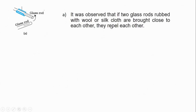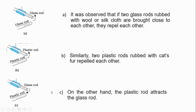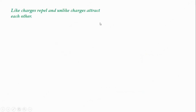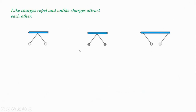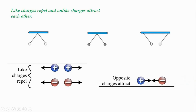It is observed that when two glass rods rubbed with wool or silk cloth are brought close to each other, they repel each other, because both glass rods have developed the same kind of charge. Similarly, when two plastic rods rubbed with cat fur are brought close, they again repel each other because they develop the same kind of charge. But when a glass rod and a plastic rod are brought close to each other, they show attraction because they are oppositely charged. The conclusion drawn is that like charges repel and unlike charges attract each other. Two positive charges repel, two negative charges repel, while one positive and one negative charge attract each other.